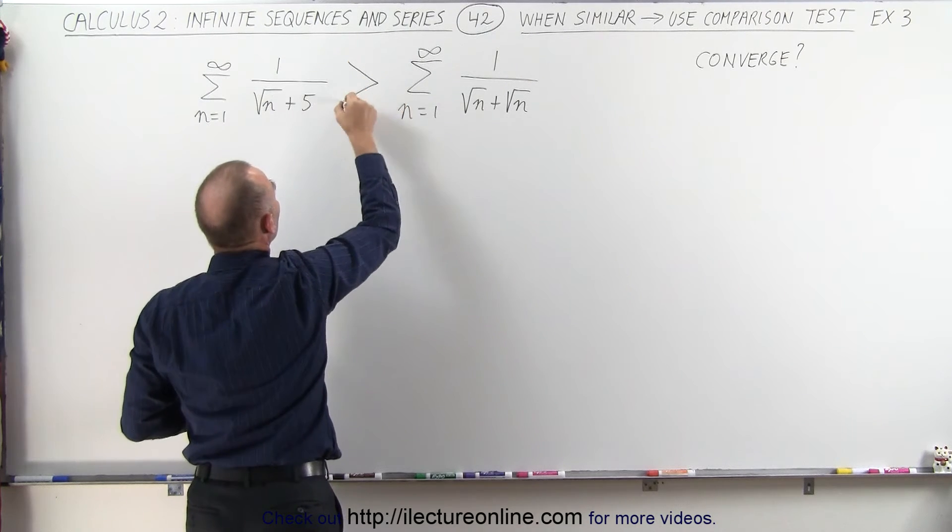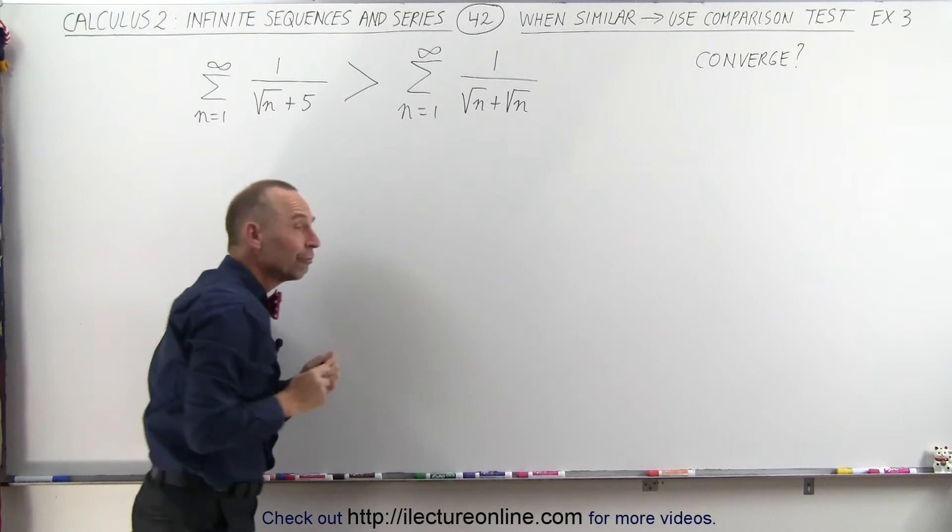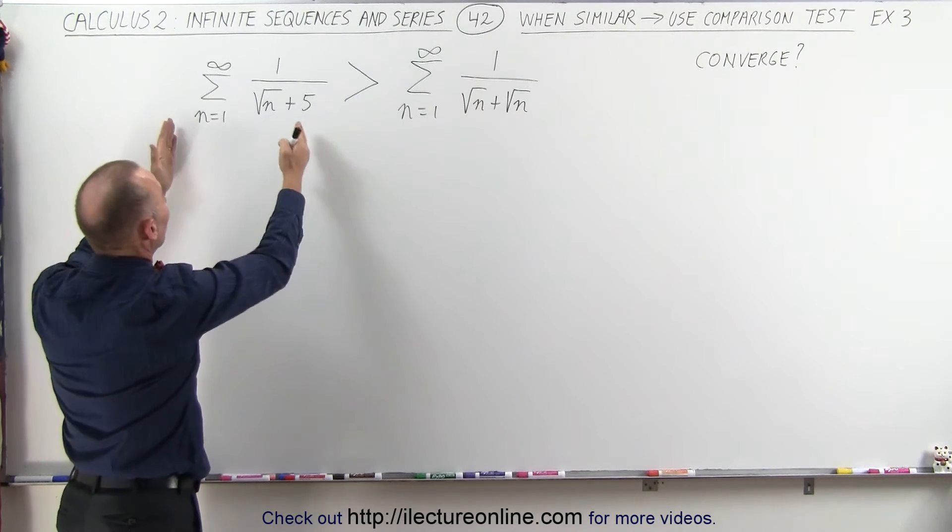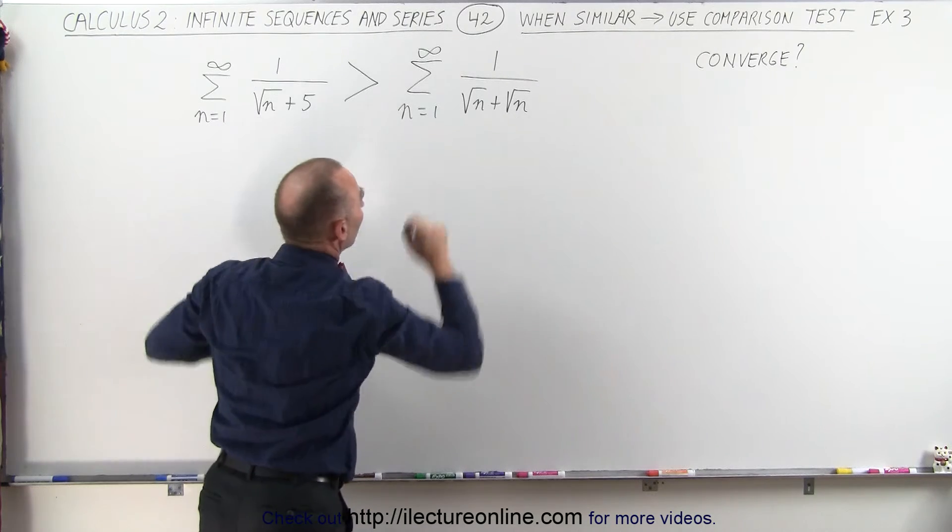So we can then write that this will be larger than that for all values over 25, and of course there's an infinite number of them, so the sum of these will be greater than the sum of those.